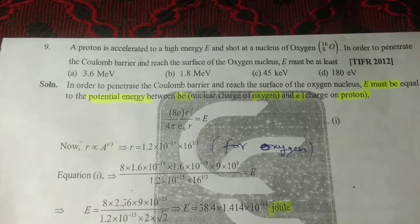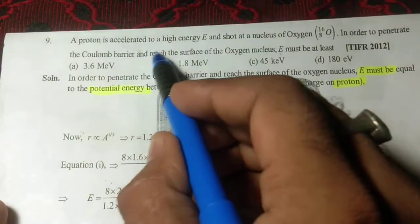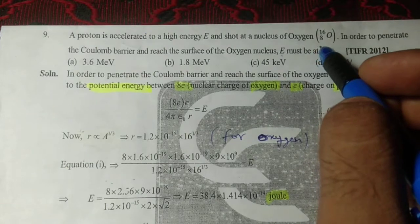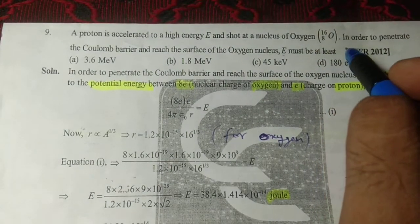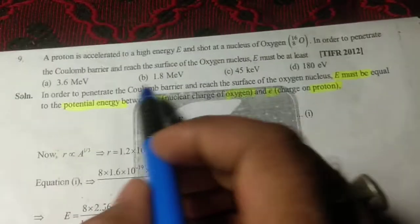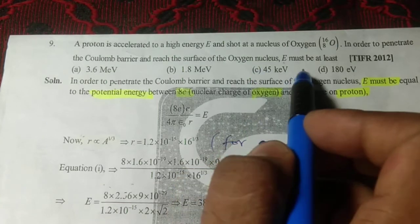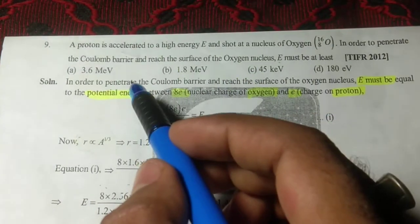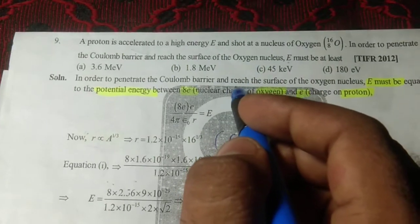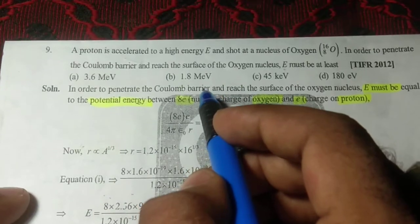The question is: A proton is accelerated to high energy E and shot at a nucleus of Oxygen-16. In order to penetrate the Coulomb barrier and reach the surface of the oxygen nucleus, E must be at least: (a) 3.6 MeV, (b) 1.8 MeV, (c) 45 keV, or (d) 180 eV.